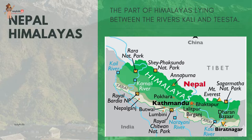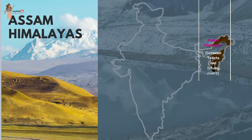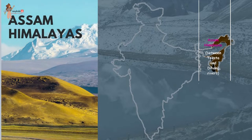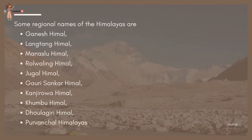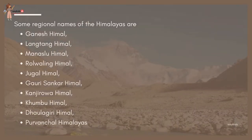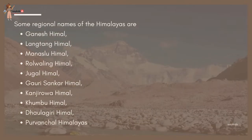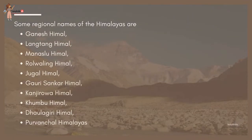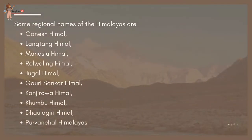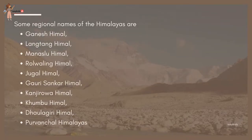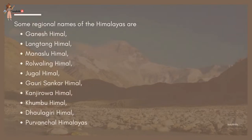The Kali and Tista rivers demarcate the Nepal Himalayas, and the part lying between the Tista and Dihang rivers is known as Assam Himalayas. There are also regional names in these broad categories, such as Ganesh Himal, Langtang Himal, Manaslu Himal, Rolwaling Himal, Jugal Himal, Gauri Sankar Himal, Khanjirowa Himal, Khumbu Himal, Dhaulagiri Himal and Purwanchal Himalayas.